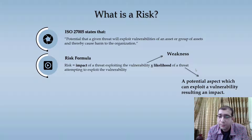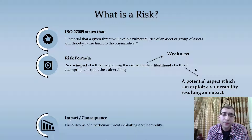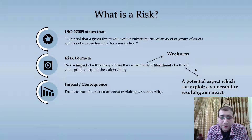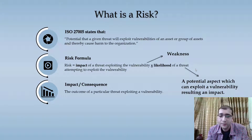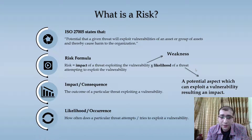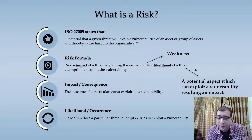A threat is a potential aspect which can exploit a vulnerability resulting in an impact. We'll be able to understand this definition better with an example. Impact is the outcome of a particular threat exploiting a vulnerability — for instance, if there is a threat and it exploits the vulnerability, the resultant outcome is the impact.